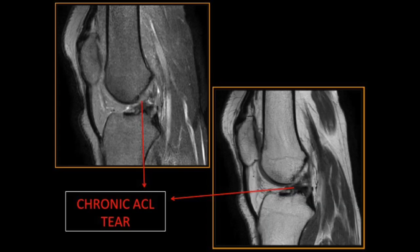In chronic ACL tear, the acute signs like bone contusion and pericruciate edema have subsided. The torn ACL is seen as an attenuated structure — the remaining ACL looks pretty attenuated because of the chronicity of the disease.